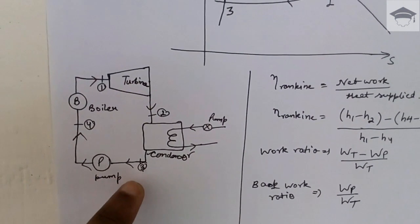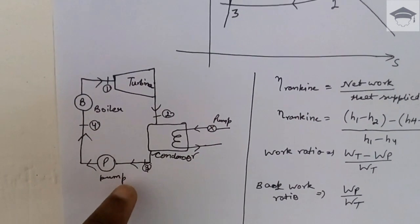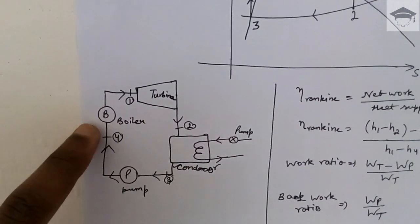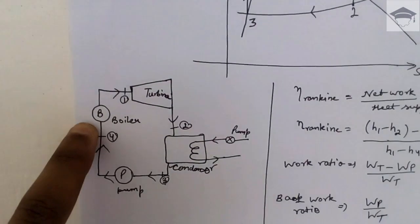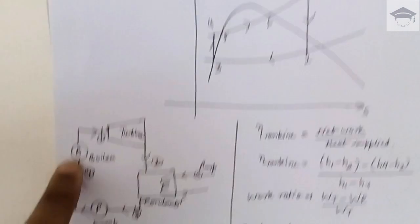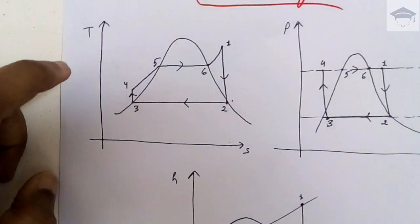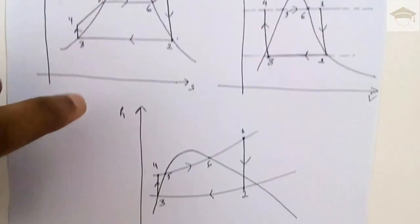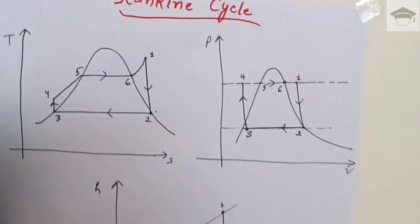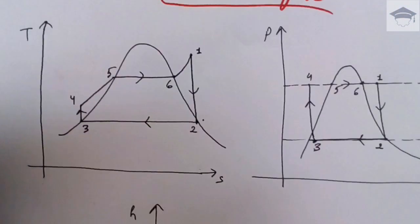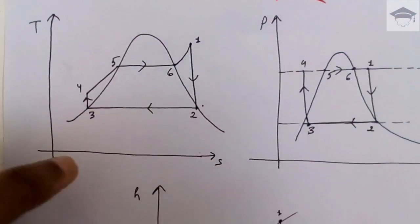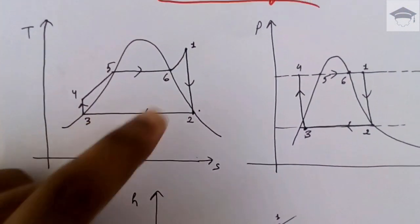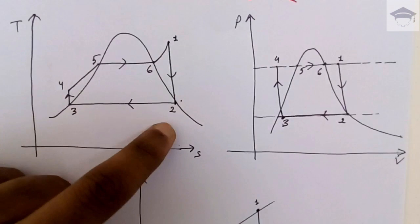Now the working on the TS diagram, PV diagram, and HS diagram. On the TS diagram, the cycle looks like this. From one to two, we get the work output from the turbine — that is from one to two, a reversible adiabatic work output.